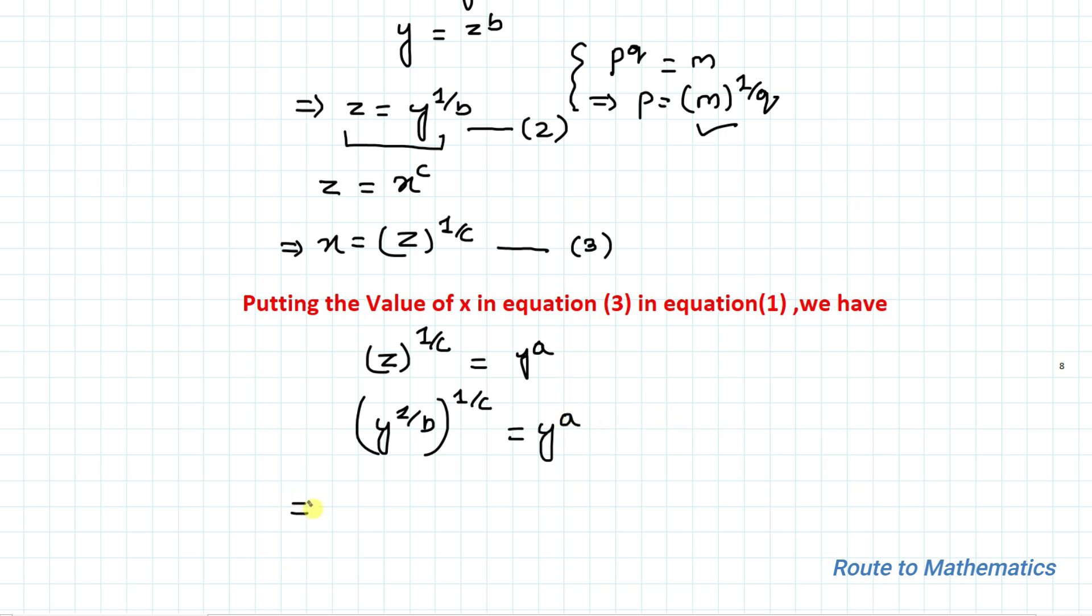In the next step we apply an exponential rule: (a to the power m) to the power n equals a to the power mn. So we have y to the power 1 by bc equals y to the power a.